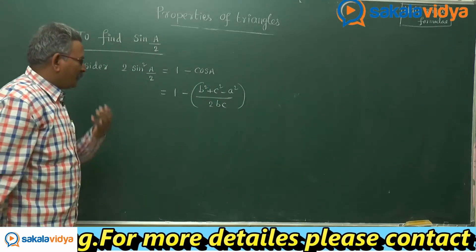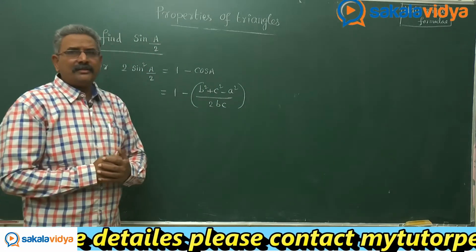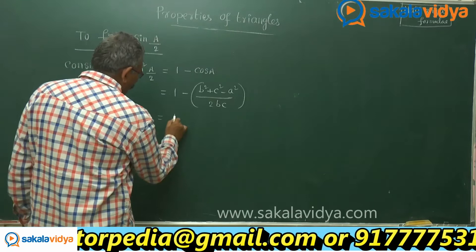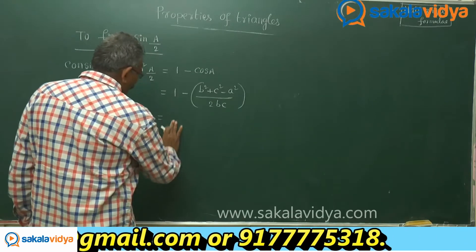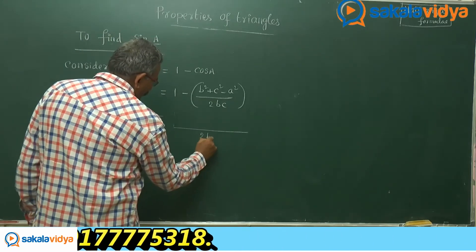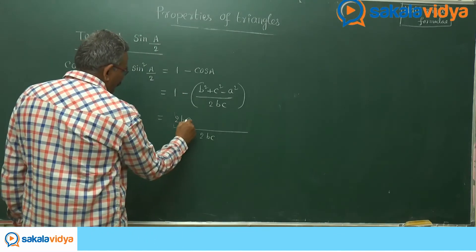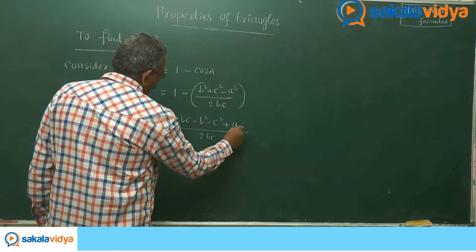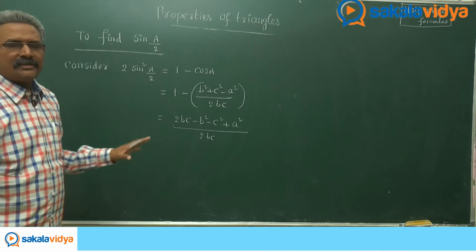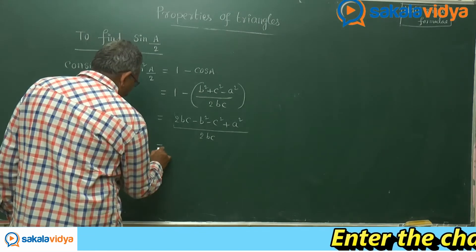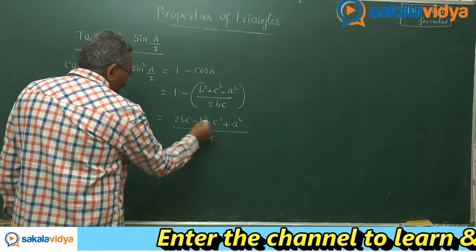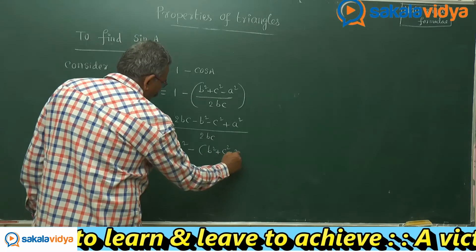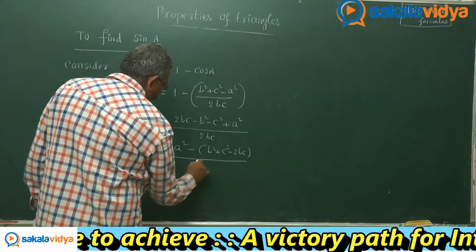Taking 2bc as the LCM, we get [2bc − (b² + c² − a²)] / 2bc, which equals [2bc − b² − c² + a²] / 2bc. Rearranging the numerator, we take a² and then factor out minus: we get [a² − (b² + c² − 2bc)] / 2bc.